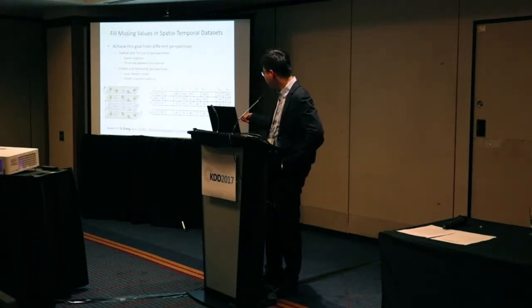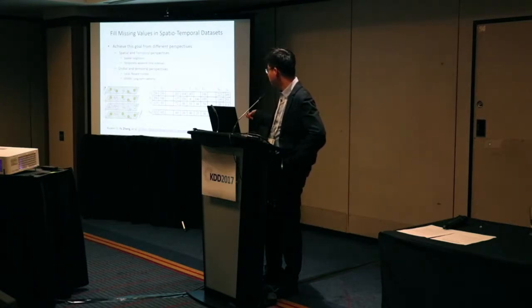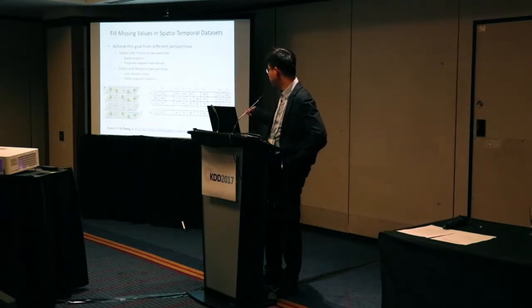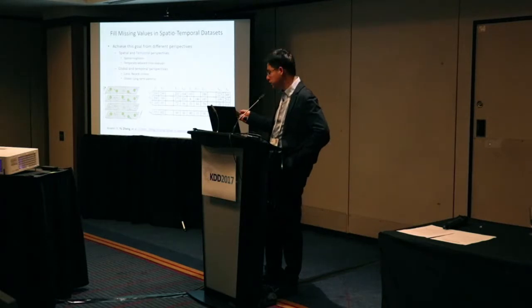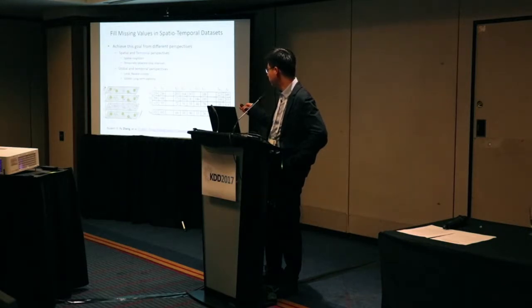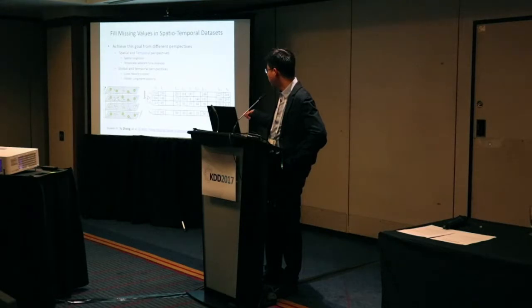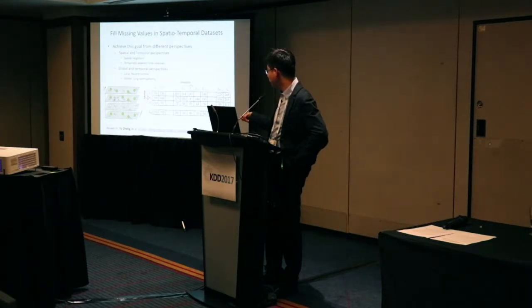If we place five-sensor data in a matrix where each row is one sensor and each column is one time stamp, the goal is to fill the missing values. From a spatial-temporal perspective, we can fill a missing value based on its spatial neighborhood — using readings from other sensors — or based on its temporal neighborhood — using the sensor's own readings from past or future hours.